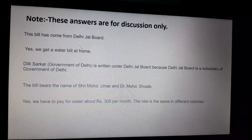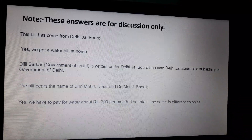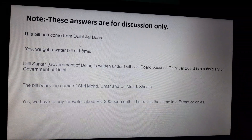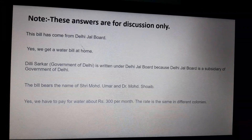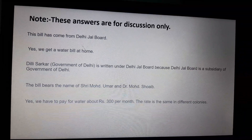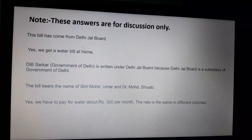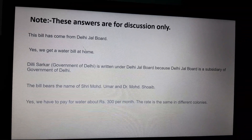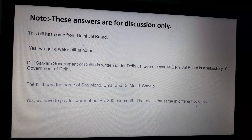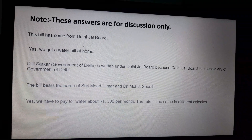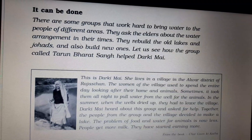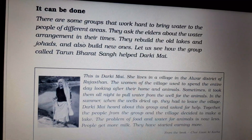Delhi Sarkar is written under Delhi Jal Board because Delhi Jal Board is a subsidiary of the Government of Delhi. The bill bears the name of Shri Mohammad Umar and Dr. Mohammad Shoy. Yes, we have to pay for water — about rupees 300 per month, though it might be a different amount for your household, so just ask your parents.